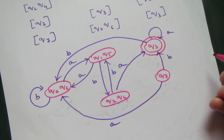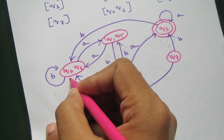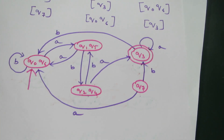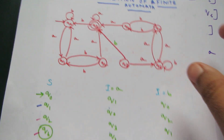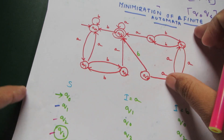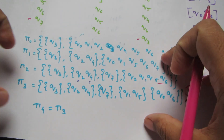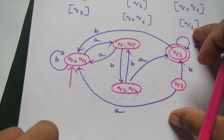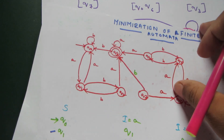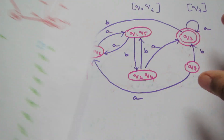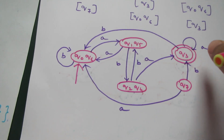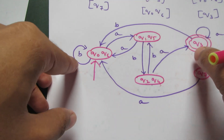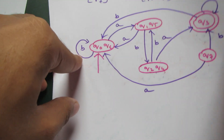The initial state is q0 q6 and the final state is q3. This was the full process: we had the original question, developed the equivalence table, extracted the sets, built the transition table, and got the minimized output. This is minimization of finite automata — reducing a bigger diagram into a smaller one. Thank you, hope you liked this video. Subscribe to our channel for more tutorials.